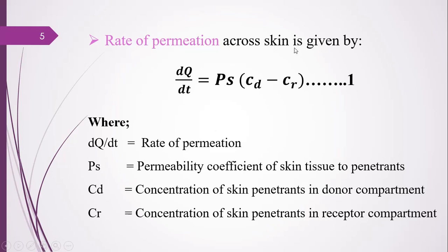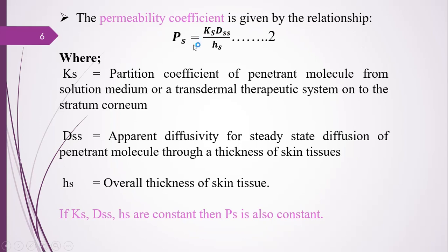The rate of permeation across the skin is given by dq/dt = Ps × (Cd − Cr), which is equation 1. Here dq/dt is the rate of permeation, Ps is the permeability coefficient of the skin tissue to penetrant, Cd is the concentration of skin penetrant in the donor compartment, and Cr is the concentration of skin penetrant in the receptor compartment. The permeability coefficient Ps is given by the relationship Ps = Ks·Dss / Hs.